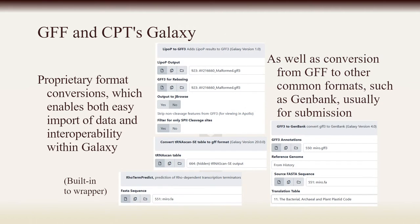We also offer a variety of formatting versions both to and from GFF. In addition to major formats like GenBank, we also support more specific outputs like tRNAscan, LiPoP, or RoadTerm Predict results to annotation-ready GFFs. And of course, for NCBI GenBank submissions, we can also convert to common database formats like 5-column tabular or GAN GenBank.